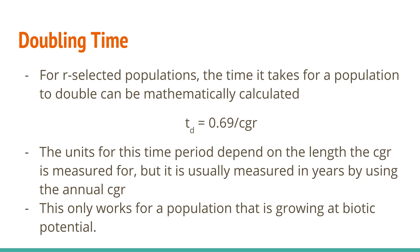These rules work under slightly different conditions and assumptions, and the Rule of 69s works well for ecology. The time units depend on how you measured your per capita growth rate — most of the time ecologists measure it over the course of a year, so with an annual per capita growth rate it tells you how many years it'll take for the population to double. This only works for populations growing at biotic potential, i.e., unlimited by environmental resistance. You may also see this written as 69 divided by the per capita growth rate when expressing it as a percentage, since a percentage is 100 times larger.